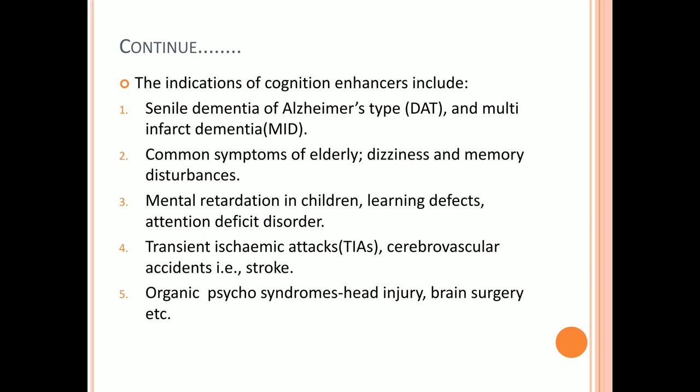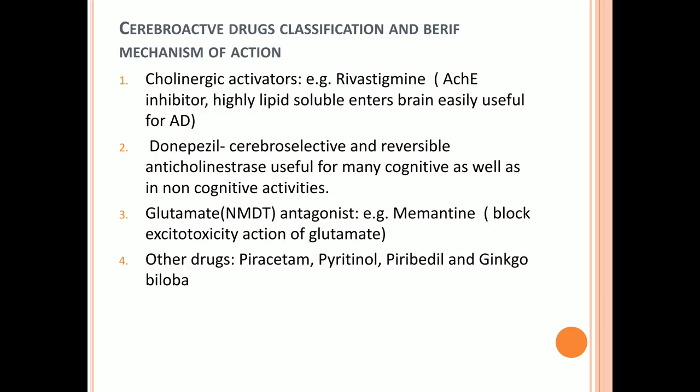These conditions in children arise from disturbances in neuronal transmission, such as issues with acetylcholine and glutamate in the brain. The fourth indication is transient ischemic attacks — ischemic attacks again due to plaque. The fifth indication is organic psychosyndromes — syndromes occurring due to head injury or brain surgery — which may also cause dementia or memory loss.